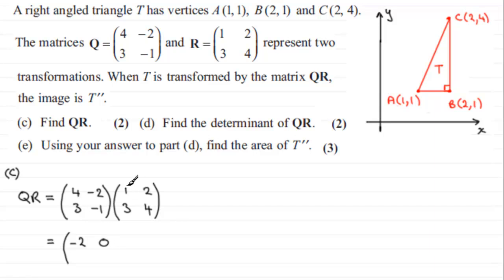Now we do the bottom row times first column. So it's 3 times 1 is 3, plus -1 times 3, which is 3. So we end up with 3 minus 3, which is 0. Lastly, bottom row, end column. So 3 times 2 is 6, added to -1 times 4, which is 4. So we have 6 minus 4, which is 2. So there's our result then for QR.